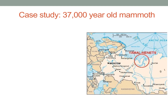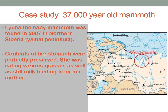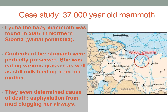A case study in archaeology is the 30,000-year-old baby mammoth named Lyuba, found in 2007 on the Yamal Peninsula in Siberia. She was perfectly preserved — fur, skin, bones, and even stomach contents — revealing she had been eating grasses and was still milk-feeding from her mother. We were even able to determine her cause of death: asphyxiation from mud clogging her airways, suggesting she got caught in a mud pit and was unable to free herself.